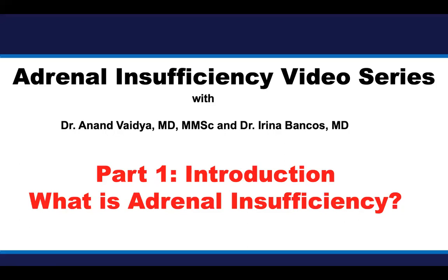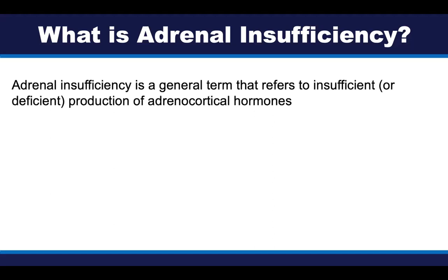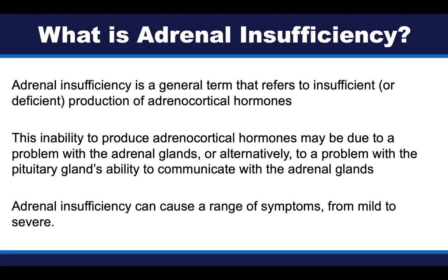This is the adrenal insufficiency video series. I'm Anand Vaidya, and this is the first video in the series, which will be an introduction to adrenal insufficiency. Adrenal insufficiency is a general term that refers to insufficient or entirely deficient production of adrenocortical hormones. The inability to produce these adrenocortical hormones may be due to a problem with both adrenal glands or due to a problem with the pituitary gland's ability to communicate with the adrenal glands. Adrenal insufficiency can cause a range of symptoms from mild to severe.